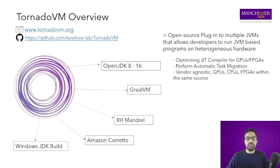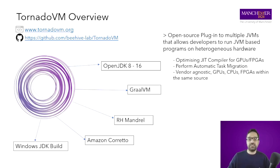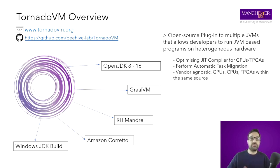TornadoVM is open source and available on GitHub, so feel free to explore. At the top level of the system stack, TornadoVM has an API. Because TornadoVM exploits parallelism rather than detecting it, it needs a way to identify where the parallel kernels are located in the source code, and that's done through the API.